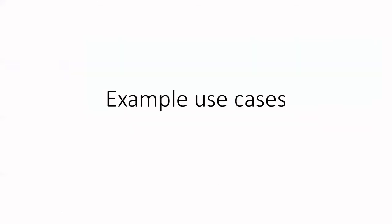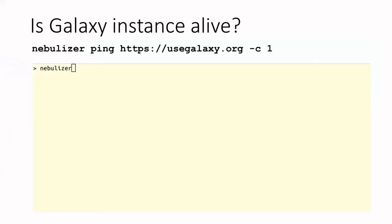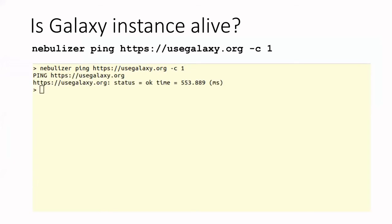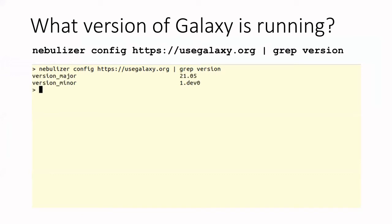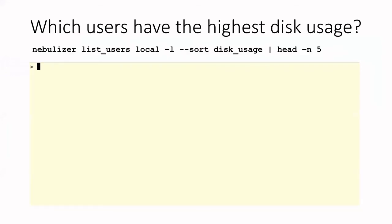I'd now like to show some examples of Nebulizer in use. For example, you can find out if a Galaxy instance is alive by using Nebulizer's ping command to see if a server returns a response. You can find out what version of Galaxy is running on a particular instance by using Nebulizer's config command and then grepping out the version information. You can find out which users on a particular instance are using the most disk space by using Nebulizer's list users command and then sorting on the disk usage.